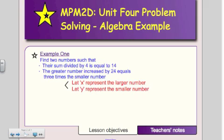For the first problem, find two numbers such that their sum divided by 4 is equal to 14, and the greater number increased by 24 equals 3 times the smaller number. So whenever you have unknowns, we are going to let X and Y represent certain pieces of information pertaining to the unknown. So the X is going to represent the larger number, while Y is going to represent the smaller number.